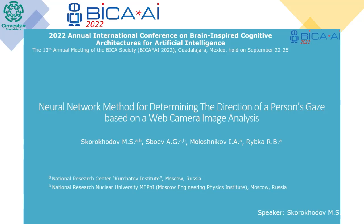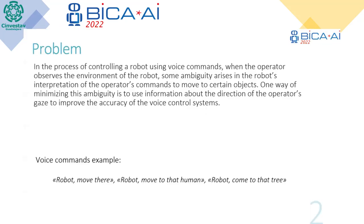We define the following problem: in the process of controlling a robot using voice commands, when the operator observes the environment of the robot, some ambiguity arises in the robot's interpretation of the operator's command to move to certain objects. One way of minimizing this ambiguity is to use information about the direction of the operator's gaze to improve the accuracy of voice control systems. Voice command examples: 'robot move there,' 'robot come to that human,' 'robot move to that tree.'